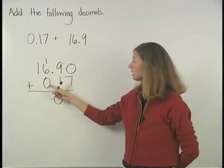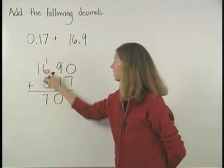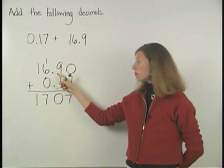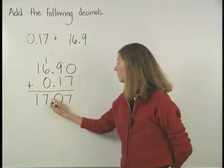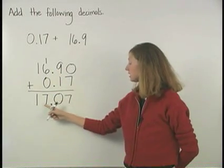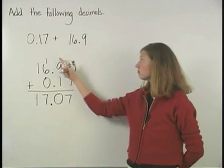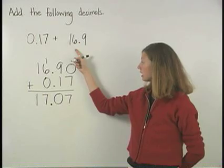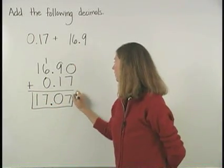1 plus 6 plus 0, which is 7, and bring down the 1. Finally, remember to bring down the decimal point. So we have 17.07. So 0.17 plus 16.9 is 17.07.